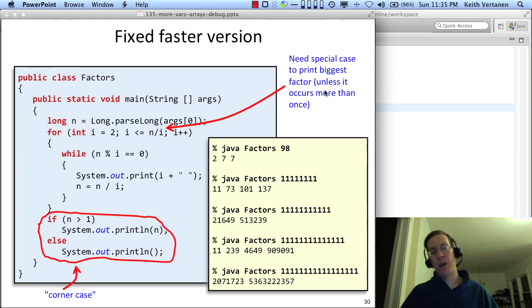And finally, to make a fast version that also is correct, we have to handle this special corner case when the biggest factor only occurs once. And now we can run for very large numbers, we can run this program quite quickly.